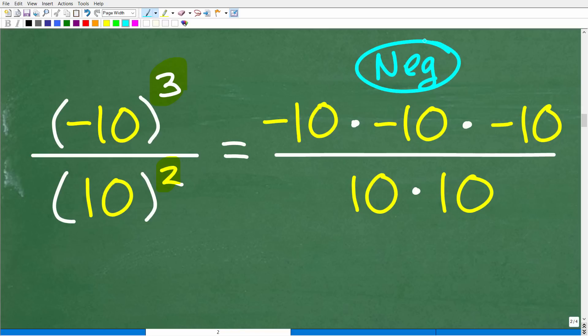Now, a lot of you can see that you're like, oh, 10 times 10 times 10, that's 100 times 10, 1,000. Don't really think in those terms just yet. What I want you to do is to concentrate on what the sign of the final answer is going to be.